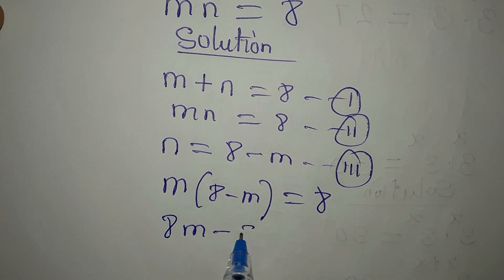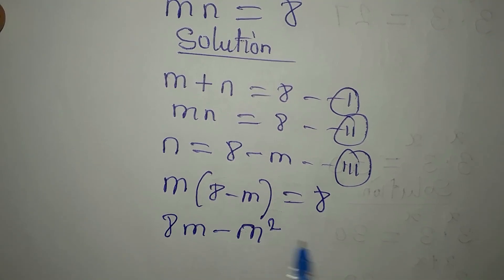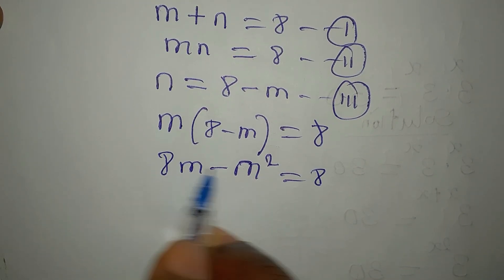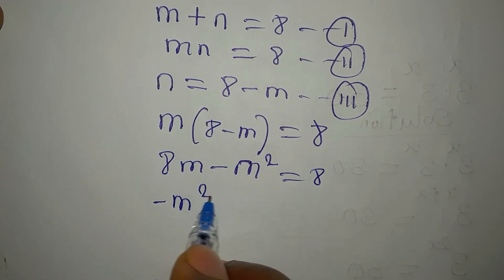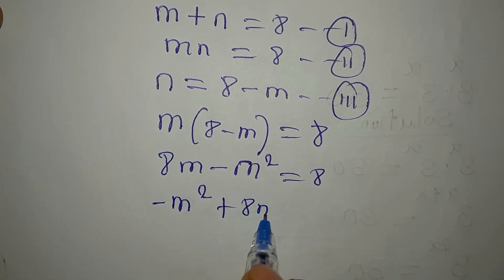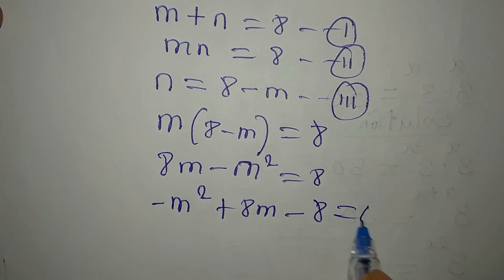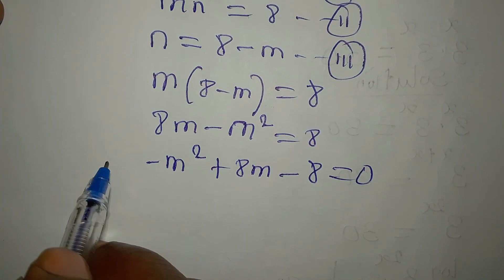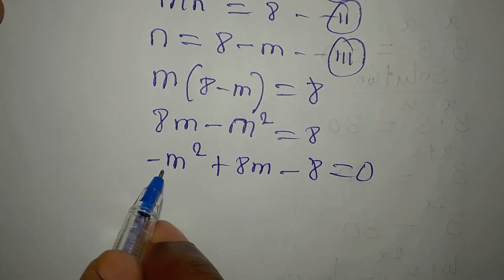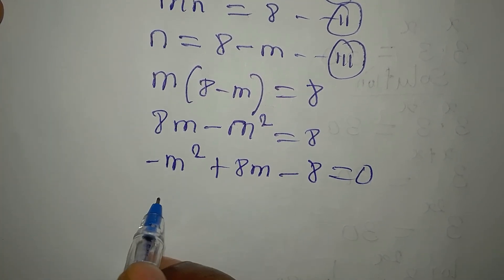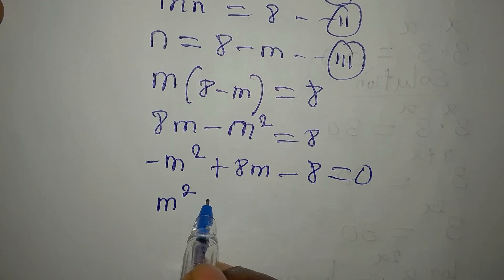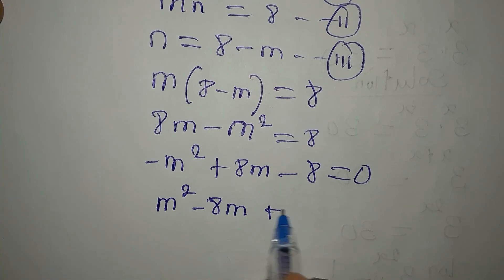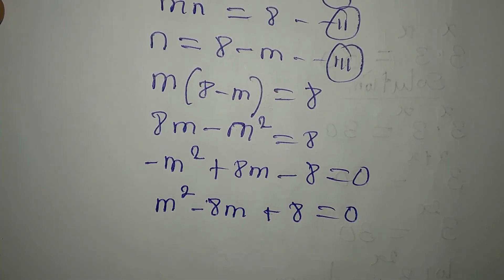Opening the bracket: 8m minus m squared is equal to 8. We need to rearrange, so we have minus m squared plus 8m minus 8 equals 0. Now multiply through by negative 1 to eliminate the negative, giving us m squared minus 8m plus 8 equals 0.